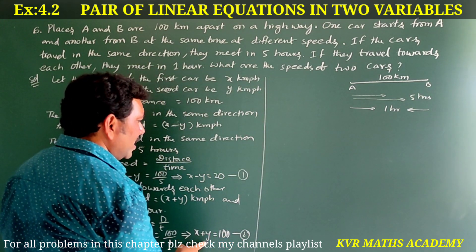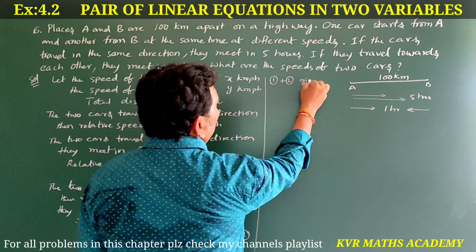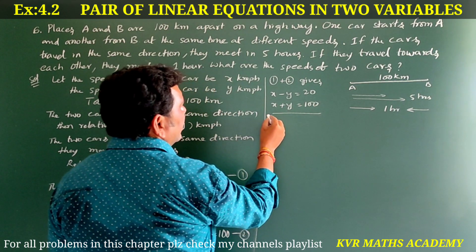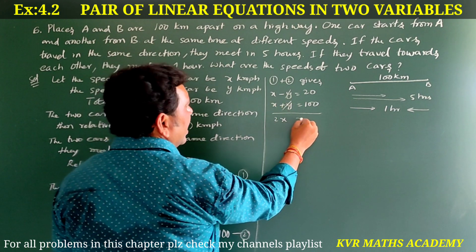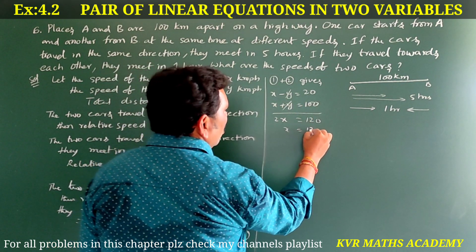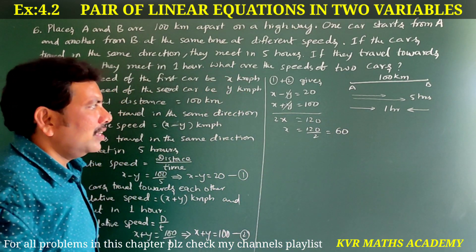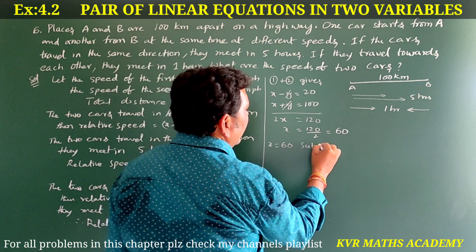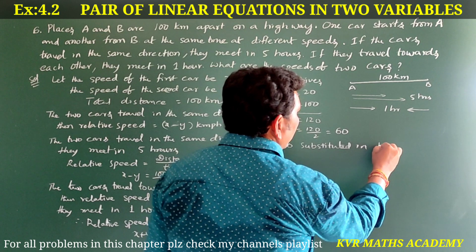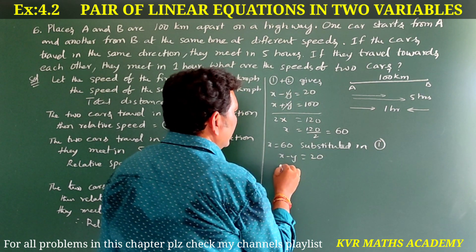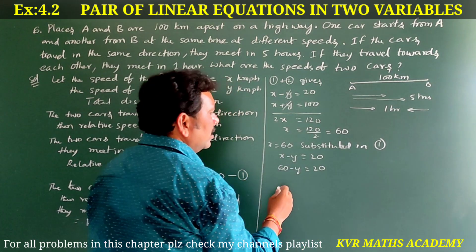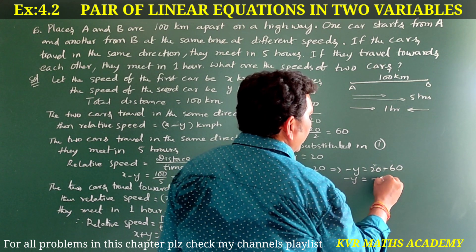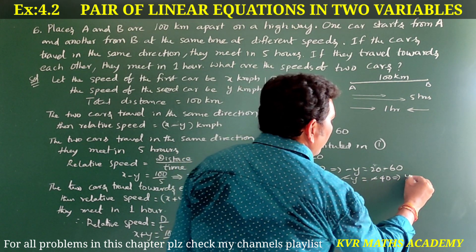Adding equations 1 and 2: x minus y is equal to 20, plus x plus y is equal to 100. The y terms cancel, giving 2x is equal to 120, so x is equal to 60. The speed of the first car is 60 kilometers per hour. Substituting into equation 1: 60 minus y is equal to 20, so minus y is equal to minus 40, giving y is equal to 40.